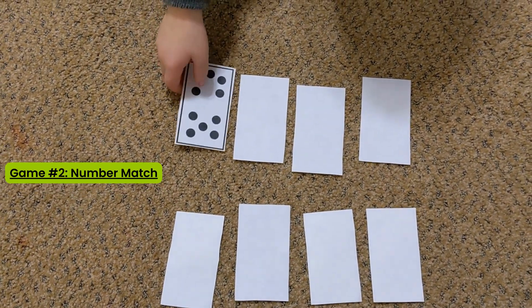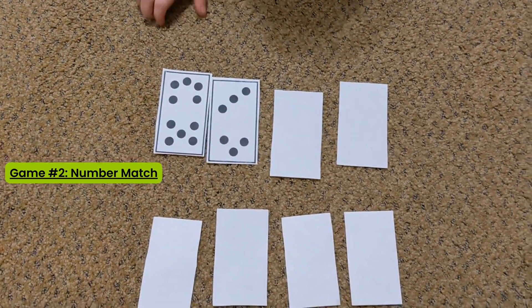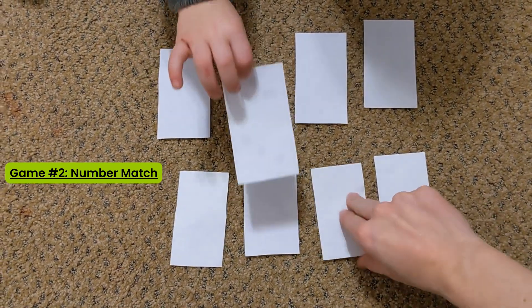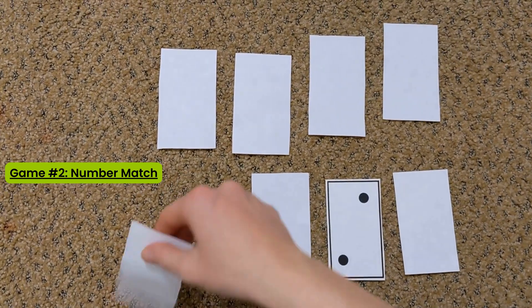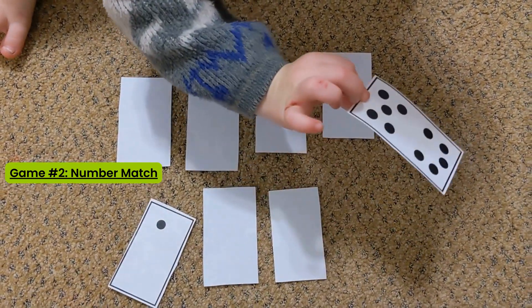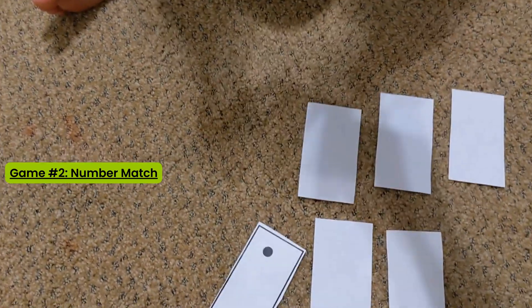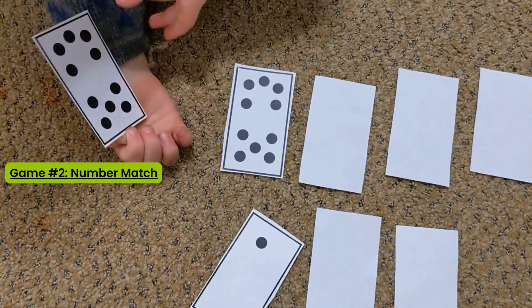The next number game we're going to play with these subitizing cards is called Matching Game. This is the classic one where you print out and cut the cards in two copies so that you can flip the cards over and try to find the match. If you do find the match, you get to keep the cards.